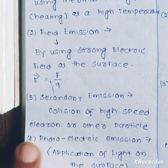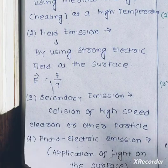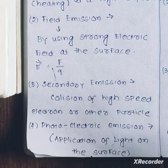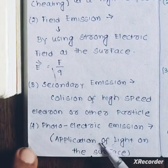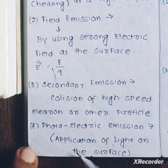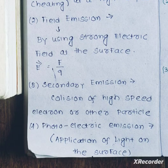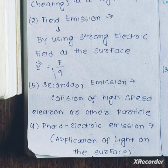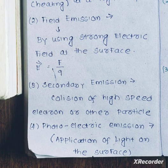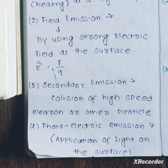Number 3 is secondary emission, which involves the collision of high-speed electrons or other particles. Next is photoelectric emission — the application of light on the surface causes radiation to be emitted by electrons.